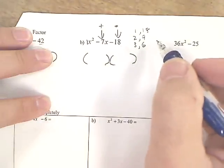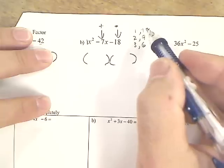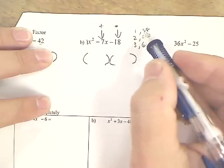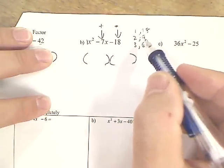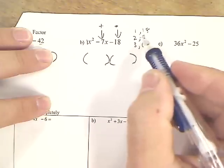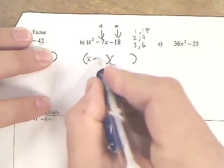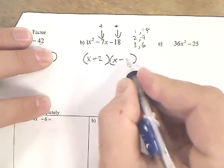And you know one of them has to be negative. So if this was negative, that would be a negative 17. You could switch it, but that would be a positive 17. Negative 7. There it is. x plus 2, x minus 9.